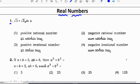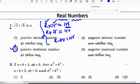So first question: root 3 plus root 5 is an irrational number — a positive irrational number. The product of rational and irrational is an irrational number. And the sum of rational and irrational is also an irrational number.